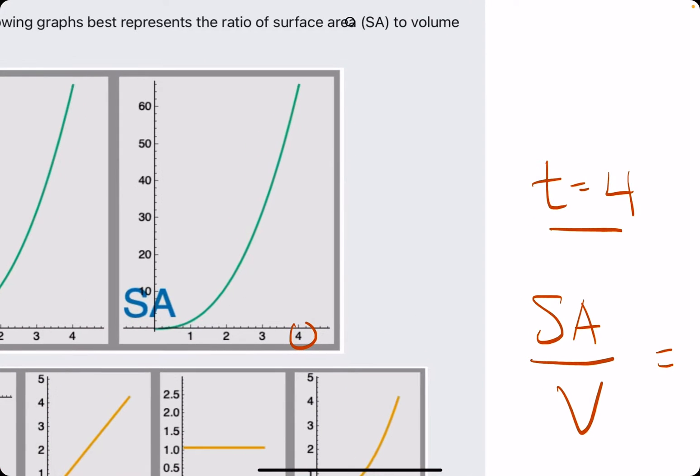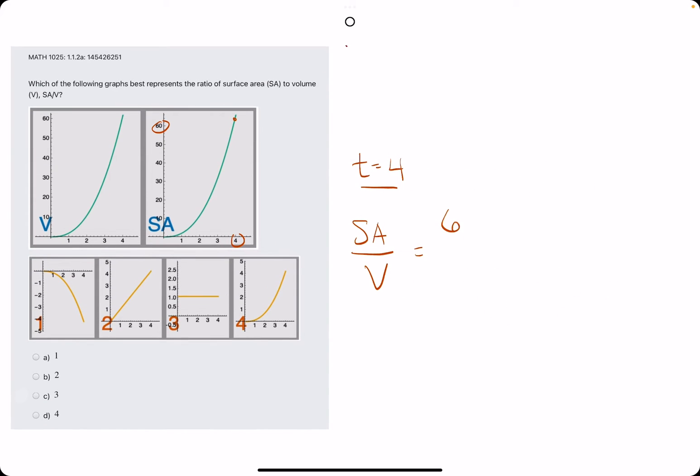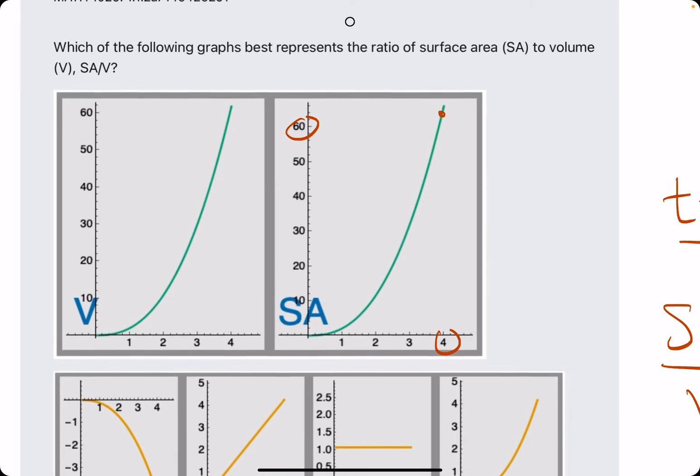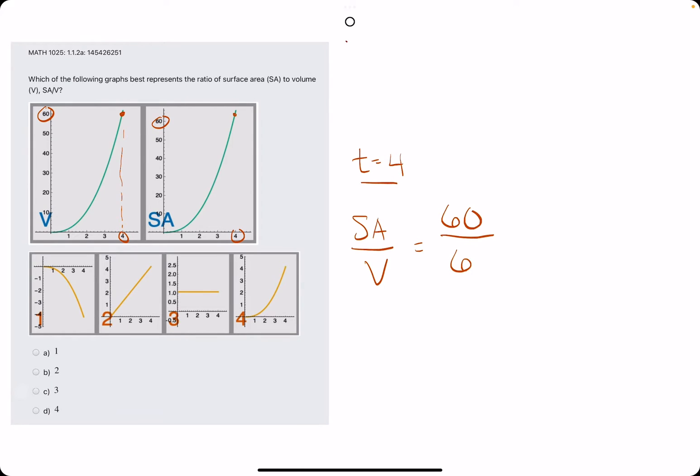So at time 4 for surface area, we have a y value or surface area value of about 60. And then on the volume graph at time 4, we have a y value or volume value of about 60.